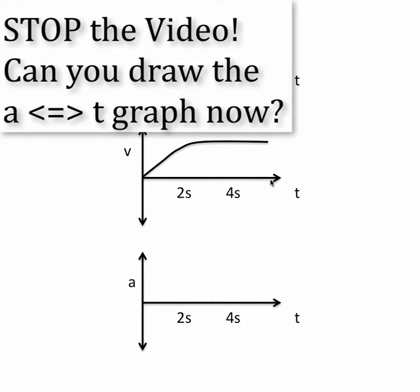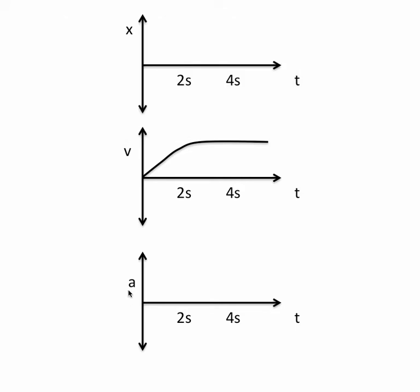So how would we make an acceleration graph from this? The acceleration is the rate of change of velocity or the slope of this line. Here we're accelerating, here we're not.